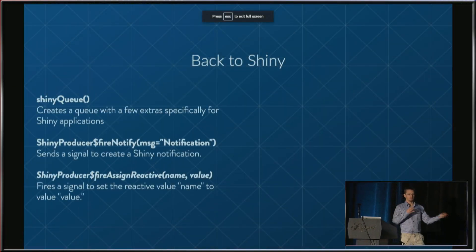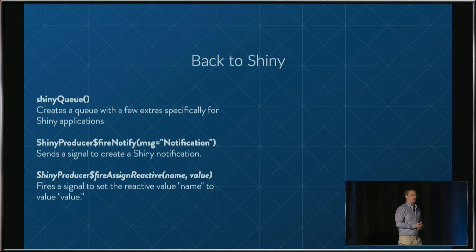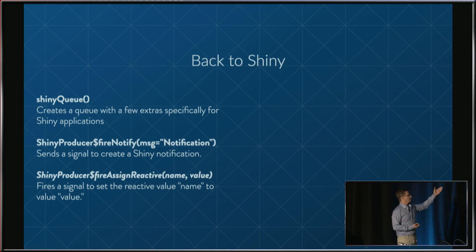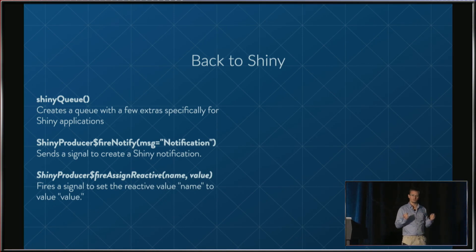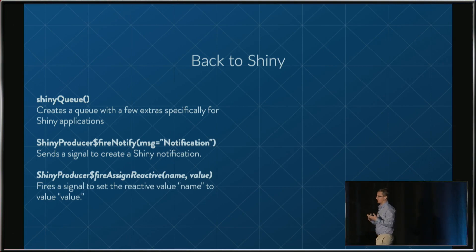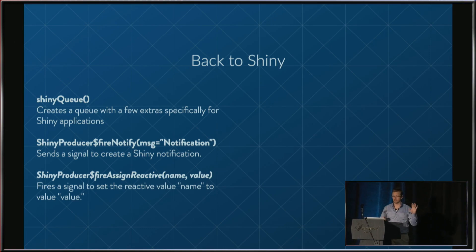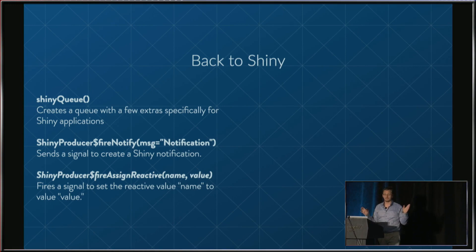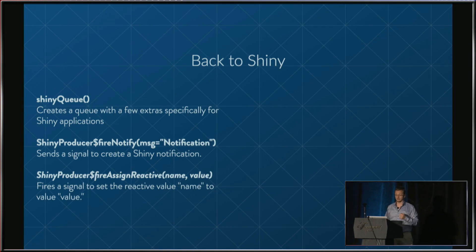Finally, getting back to Shiny. There's some special stuff in this package specifically for Shiny, as that's really the major use case we're targeting. Shiny Q creates a queue with extras specifically for Shiny applications — it also does cleanup of the queue and temporary files on session end, so you don't have to worry about any of that. It also has methods fire_notify and fire_assign_reactive for creating notifications or assigning values to reactive values specifically.